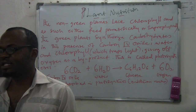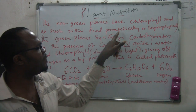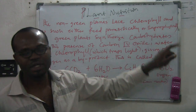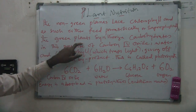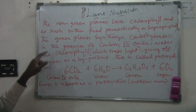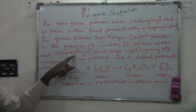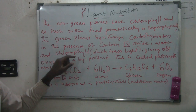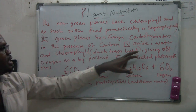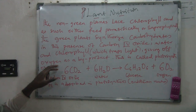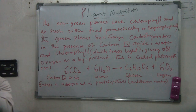Non-green plants feed parasitically or saprophytically. So how do the green plants feed? The green plants synthesize carbohydrates in the presence of carbon dioxide, water, and chlorophyll. The function of chlorophyll is to trap light rays. This process gives off oxygen as a byproduct. This process is known as photosynthesis.